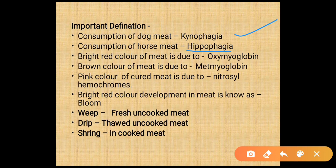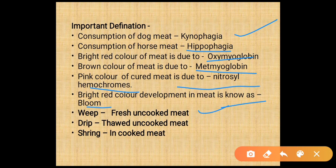Bright red color in meat is due to oxymyoglobin. Brown color in meat is due to metmyoglobin. Pink color of cured meat is due to nitrosohaemochrome. Bright red color development in the meat is known as bloom. Fresh uncooked meat is known as whip, and the third uncooked meat is known as tripe. Cooked meat is known as shrink.